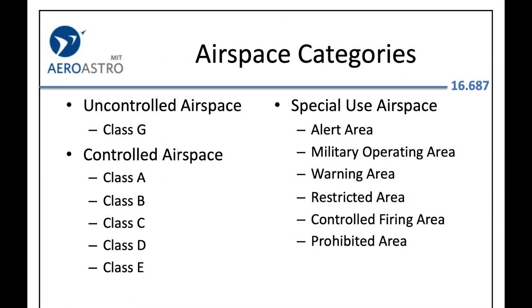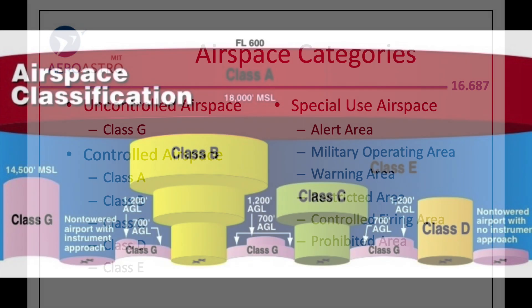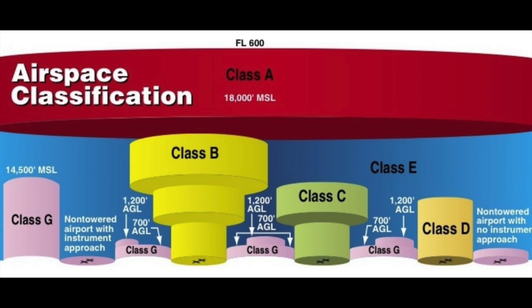Here are the airspace categories. Class A is most controlled — you have to be on an instrument flight plan. Classes B, C, and D are towered airports. Class E is controlled airspace that connects B, C, and D. Class G is uncontrolled — 98% of our flying will be there. Class B is like Atlanta airport; C and D are busy towered airfields. The blue is Class E, which we can't enter without an exemption. The pink is Class G, which goes up to 700 feet or 1200 feet — that is where we fly our models and where we get the higher altitudes.